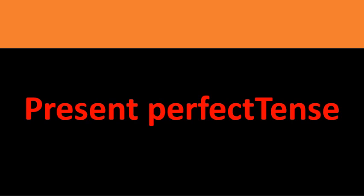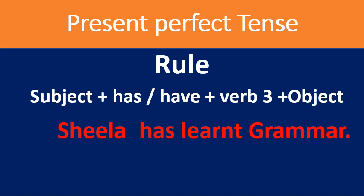Now I take you to present perfect tense. Present perfect tense describes an action or situation that started in the past and continues in the present. For example: 'I have lived in Bangalore since 1999.' The rule is: subject + has/have (depending on the subject) + verb in the third form + object. Depending on the nature of the subject, we use either 'has' or 'have.'